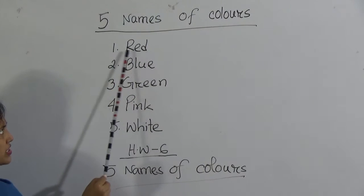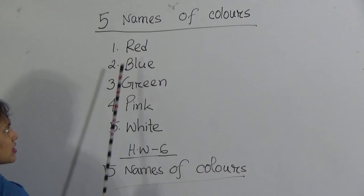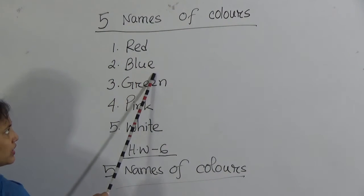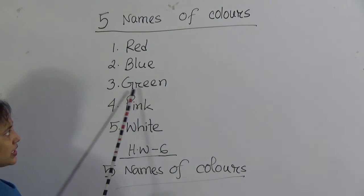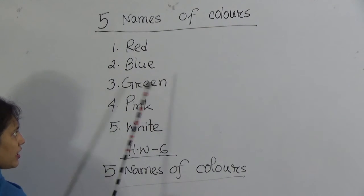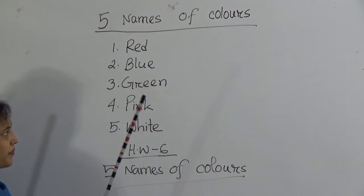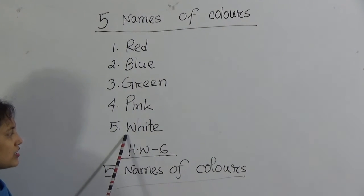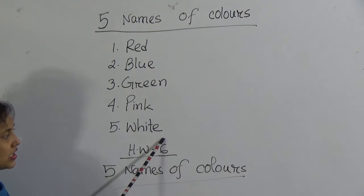Number 1 is red. R-E-D, red. Number 2, blue. B-L-U-E, blue. Number 3 is green. G-R-E-E-N, green. Number 4, pink. P-I-N-K, pink. And number 5 is white. W-H-I-T-E, white.